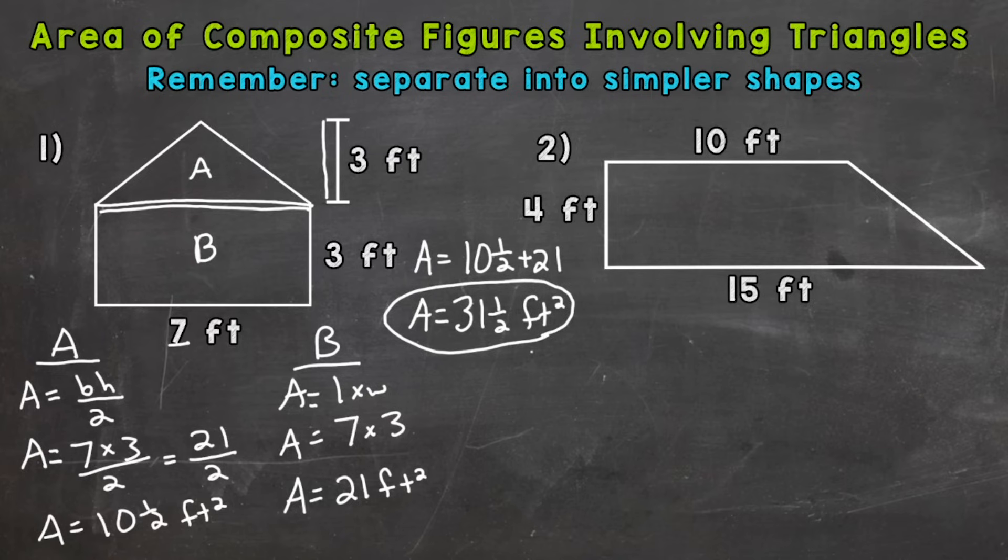Let's move to number 2. Again, we need to separate into simpler shapes. Let's cut this shape right here so we have a triangle and a rectangle. We'll call the rectangle A and the triangle B. It doesn't really matter which one you name A or B or what you name them, as long as you're organized. Let's find the area of A first.